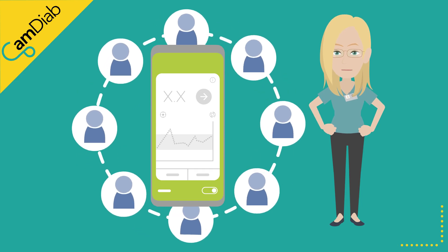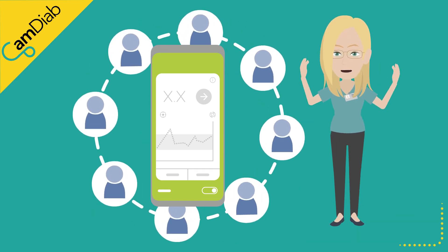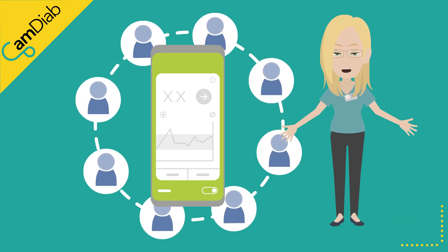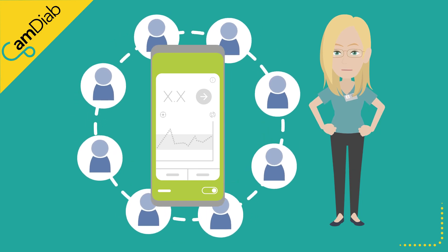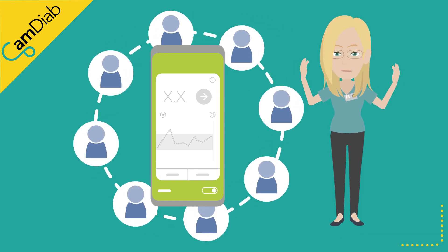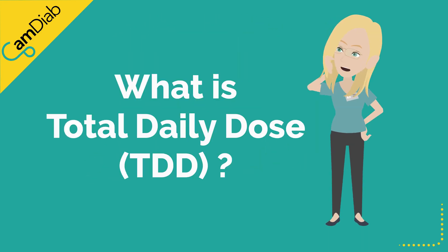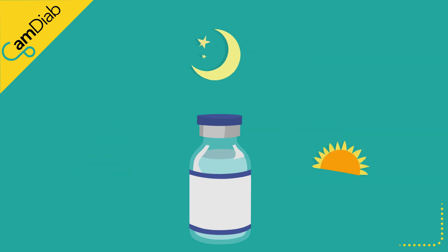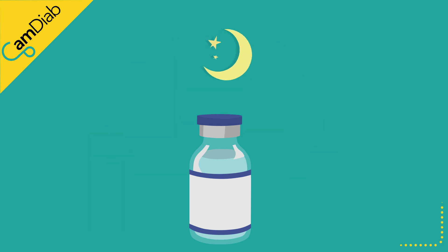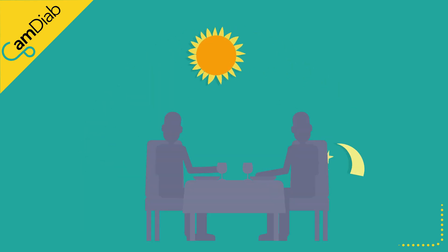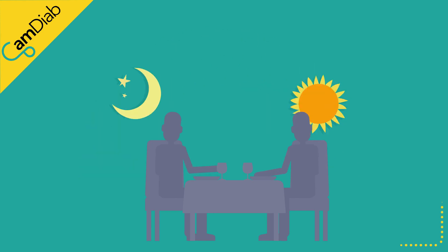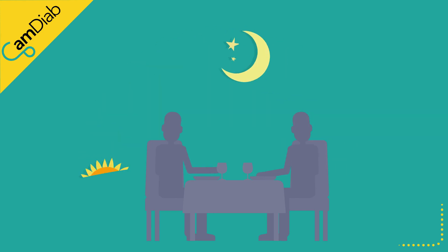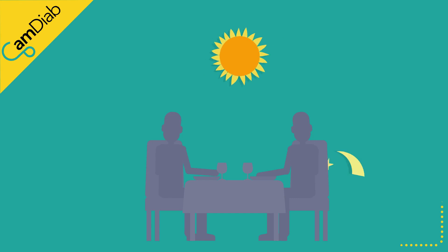MyLifeCam APS FX uses your total daily dose as one of the factors it takes into account in order to calculate how much insulin to deliver. So what is your total daily dose of insulin, often abbreviated to TDD? It is all the insulin you generally require in a 24-hour period — the insulin you need for your meals and snacks as well as your body's background, or so-called basal, insulin requirements.